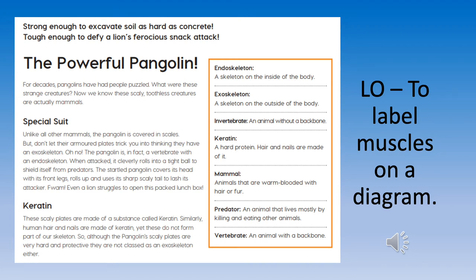Endoskeleton: a skeleton on the inside of the body. Exoskeleton: a skeleton on the outside of the body. Invertebrate: an animal without a backbone. Keratin: a hard protein that hair and nails are made of. Mammal: animals that are warm-blooded with fur or hair. Predator: an animal that lives mostly by killing and eating other animals. Vertebrate: an animal with a backbone.